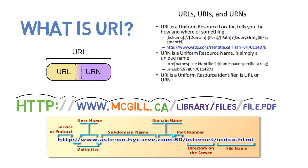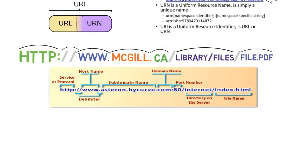URL and URN are two parts — together they make URI. URN is more of a dynamic nature; it has a query string in it. If you're looking for a flight, it would have flight-related information. If you're looking for a book, it will have an ISBN in it. So every industry has different kinds of standards.